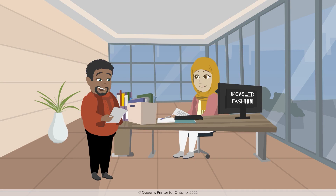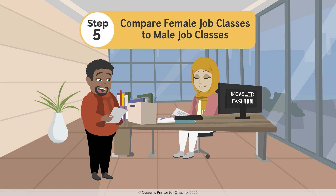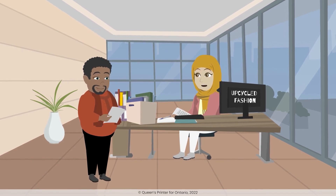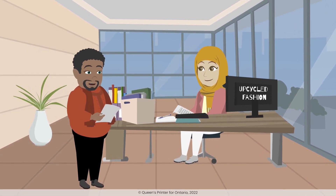Haifa and Lucien, owners of Upcycled Fashion, just finished calculating the job rate for each job class in Step 4. They now have all the information they need to compare female job classes to male job classes. Now we can finally see if there are any pay discrepancies between our female and male job classes. The toolkit recommends that we try doing a job-to-job comparison first and then switch to the proportional value method if we can't find a job-to-job comparator for all our female job classes.